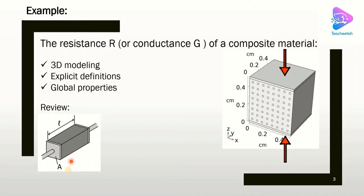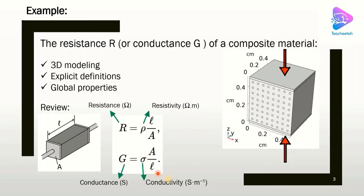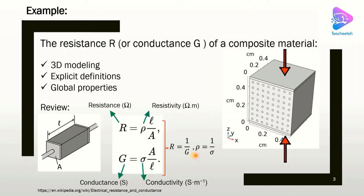To review the concepts: for a standard structure with cross-section A and length L, the resistance in ohms is defined as rho times L over A, where rho is the resistivity as a material property. The conductance is defined as sigma times A over L, where sigma is the conductivity. From these two equations, we know that resistance is the inverse of conductance, and resistivity is the inverse of conductivity. Resistivity and conductivity are material properties.